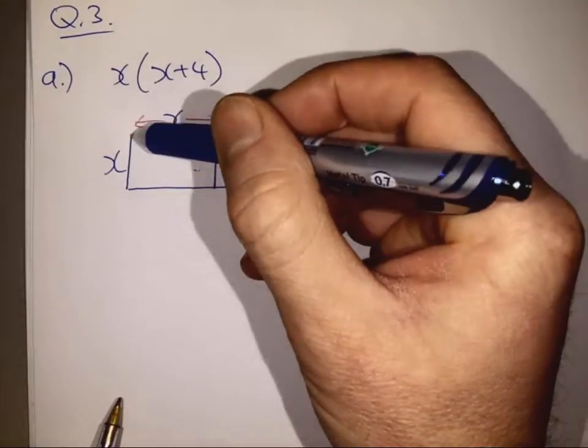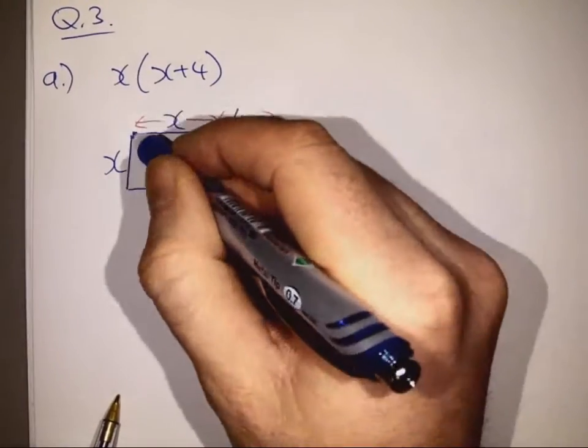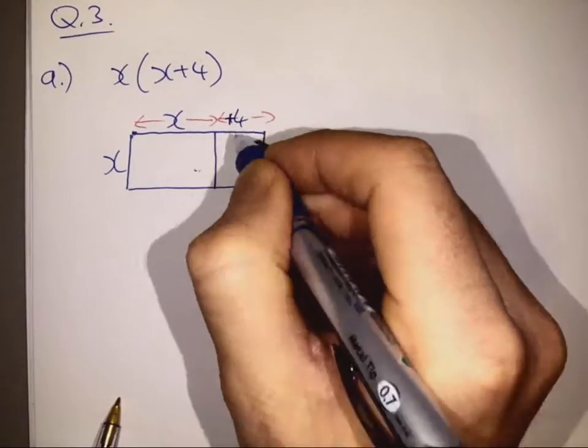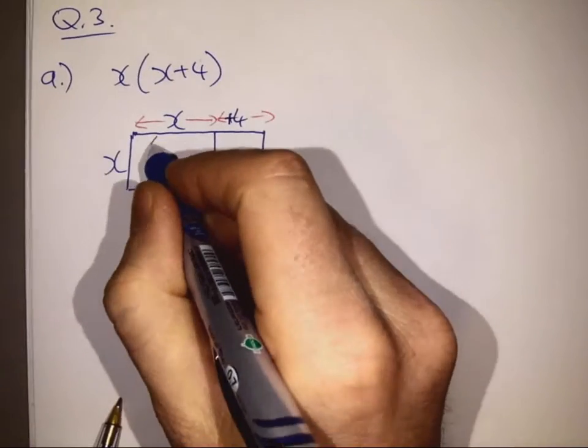So here we have x. We're pretending that x, if you like, is the width of a rectangle and the overall length is x plus 4. You could write in a plus there. So the length of this rectangle,